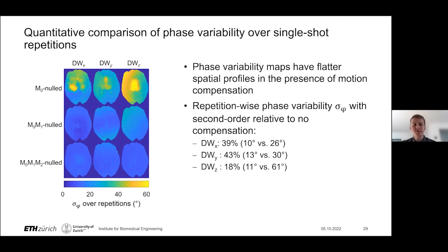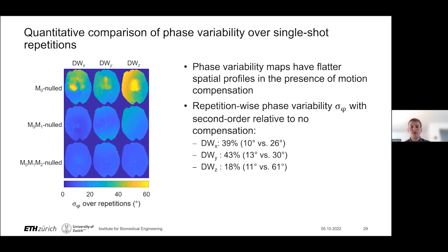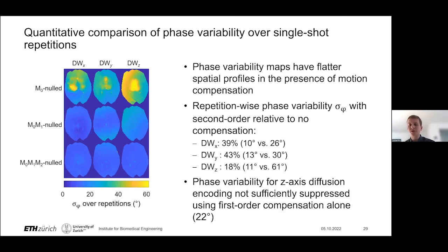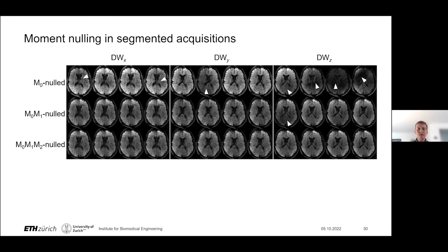To make a quantitative comparison, we averaged the standard deviation of phase variability over the entire imaging volume and over both volunteers. For second-order relative to no compensation, we had a nearly 60% reduction in phase variability for x- and y-axis diffusion encoding, and more than 80% reduction for z-axis diffusion encoding. The phase variability for z-axis encoding with first- and second-order compensation is no longer anomalously higher than in the other two directions, indicating the motion compensation is effective in all directions. For first-order compensation alone, there was still phase variability of around 22 degrees, which, as I'll show on the next slide, was not necessarily sufficient.